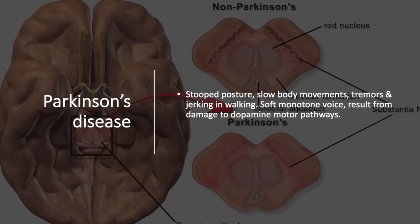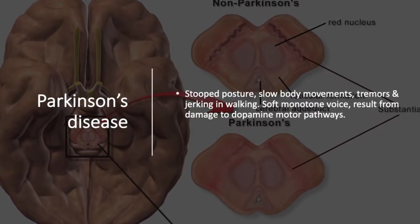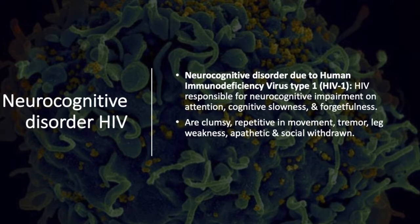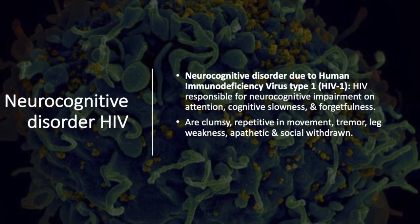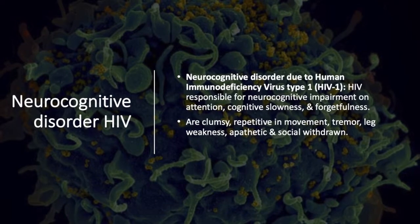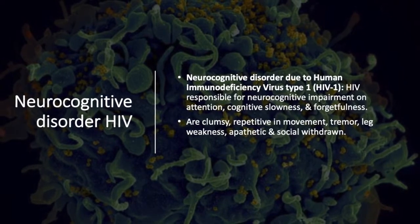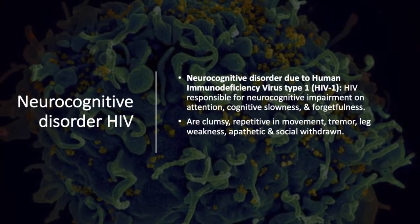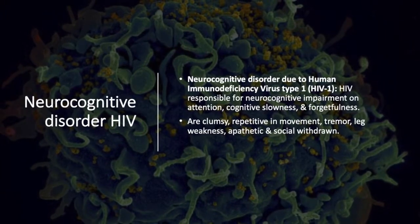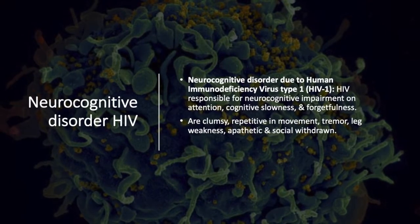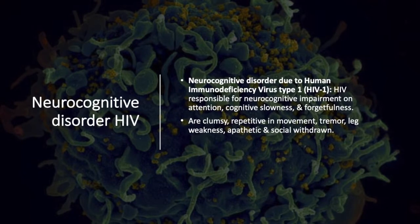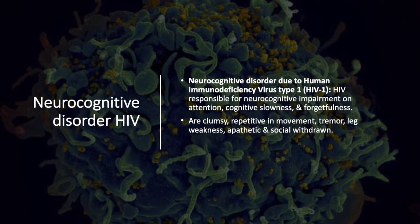Individuals with Parkinson's have a soft, monotone voice resulting from damage to the dopamine motor pathways. Neurocognitive disorder due to HIV type 1 is when HIV is responsible for neurocognitive impairment in attention, cognitive slowness, and forgetfulness. The individual is clumsy, engages in repetitive movements and tremors, has weak legs, and is apathetic and socially withdrawn.